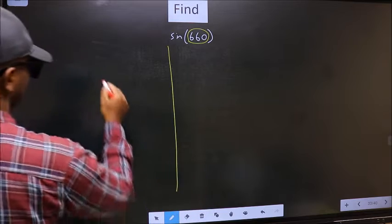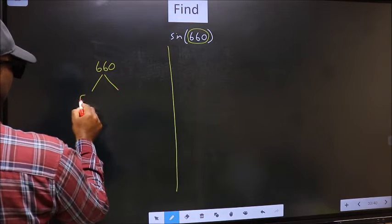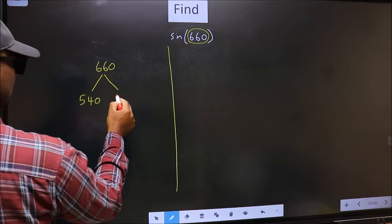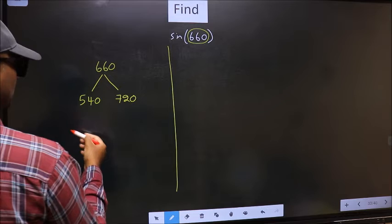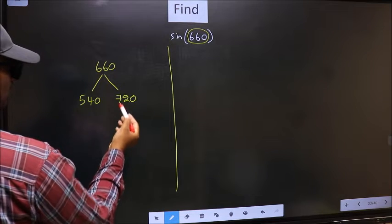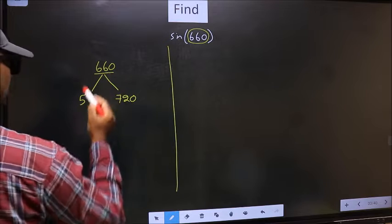What I mean is, 660 lies between 540 and 720. This is 180 times 3 and this is 180 times 4. Between these two numbers, 660 lies.